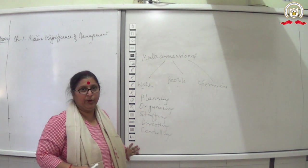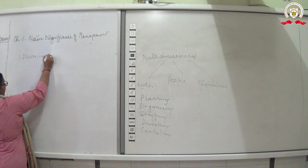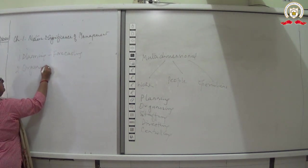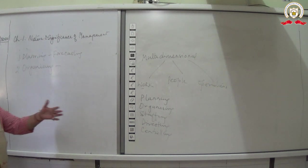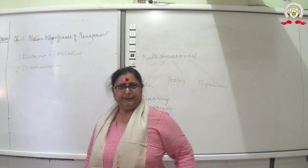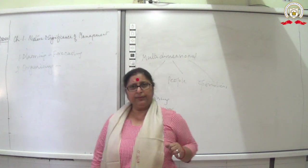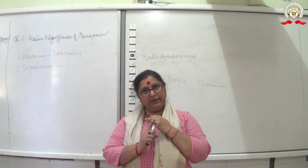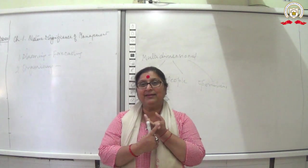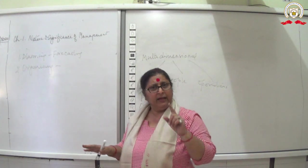For planning, the keyword is forecasting. For organizing, when production increases, resources increase — manpower, capital, marketing activities, advertising all increase. One person cannot manage all these activities, so in a large organization a department is created for each function with one person in charge of each department.